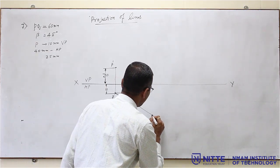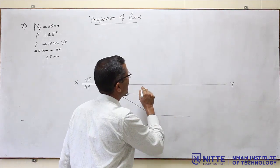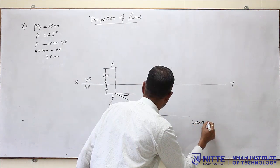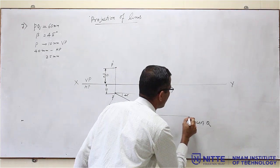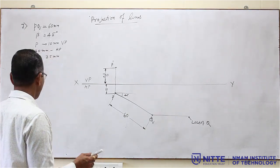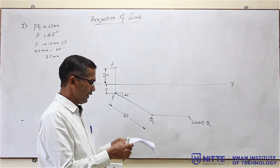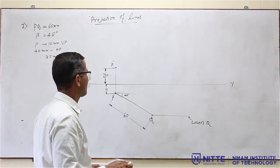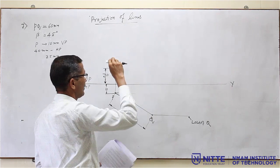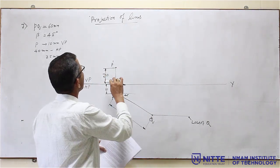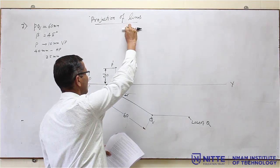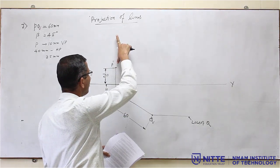This is the locus of Q. Draw a light line parallel to the XY line and call this as the locus of Q — Q moves along this. They have given one more piece of information: the difference between the distance of P and Q above HP is 35mm. Q will be somewhere here. P is 30mm above HP, and the difference between P and Q should be 35mm.